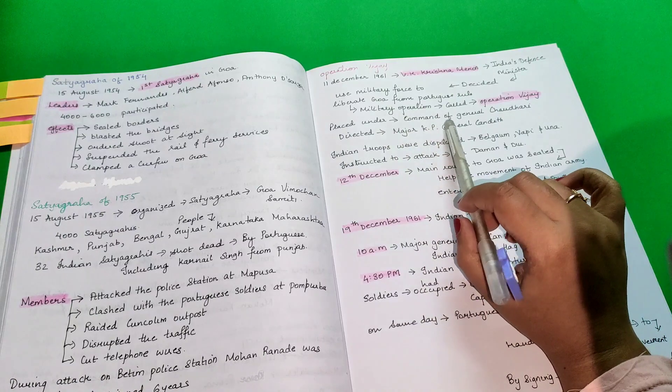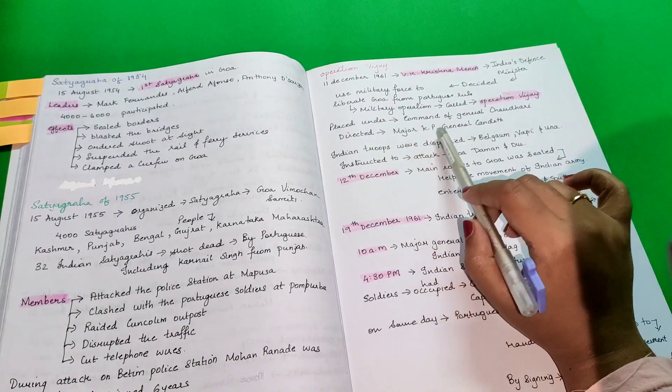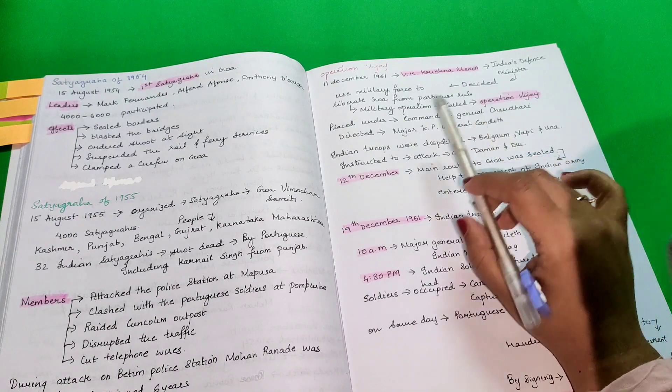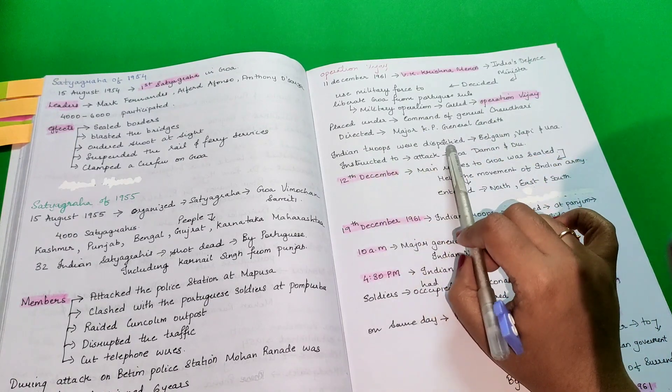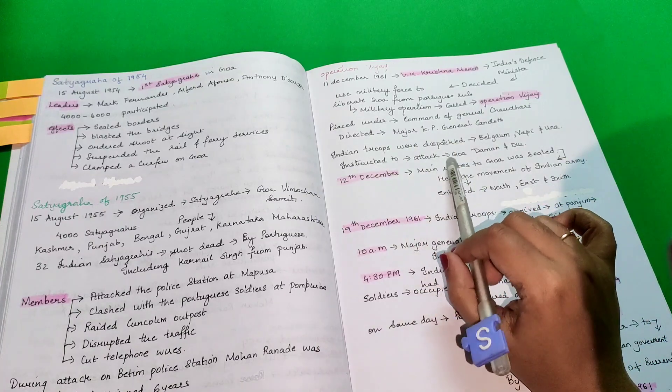It was placed under the command of General Chaudhary, directed by Major K.P. General Candeth. Indian troops were dispatched to Belgaum, Vapi and Una, instructed to attack Goa, Daman and Diu.